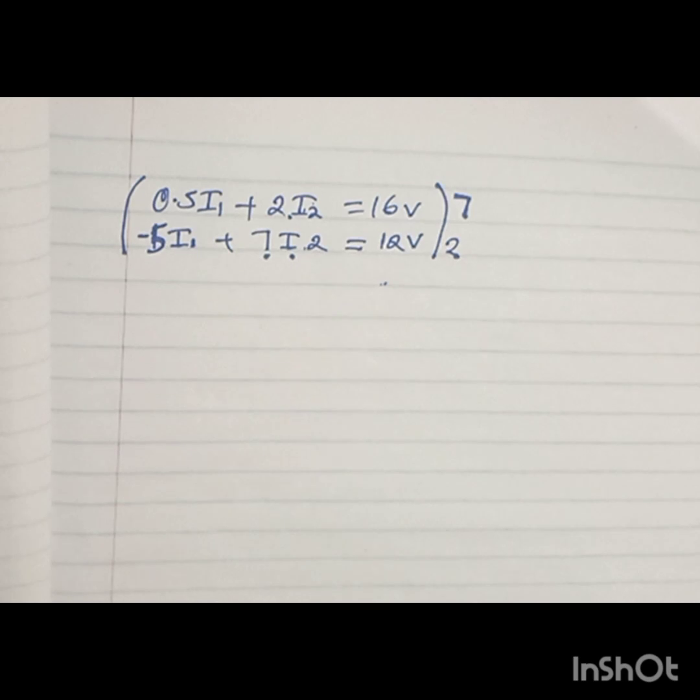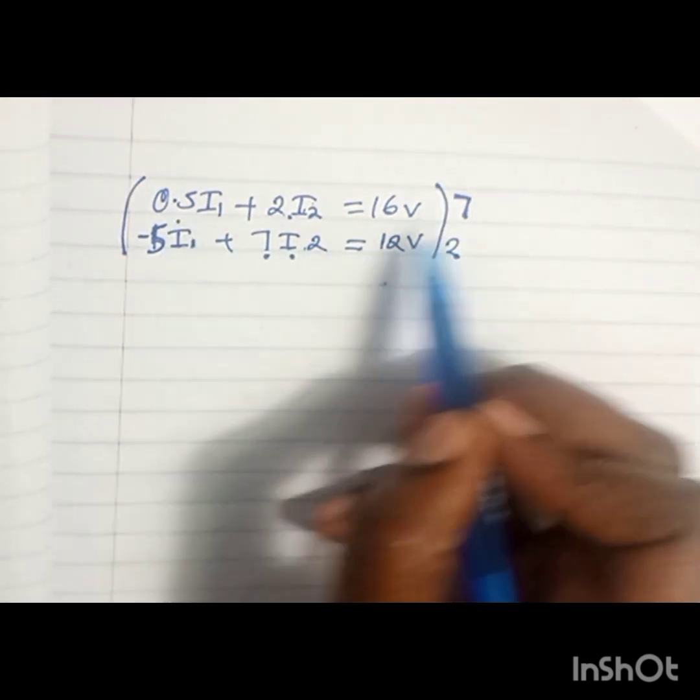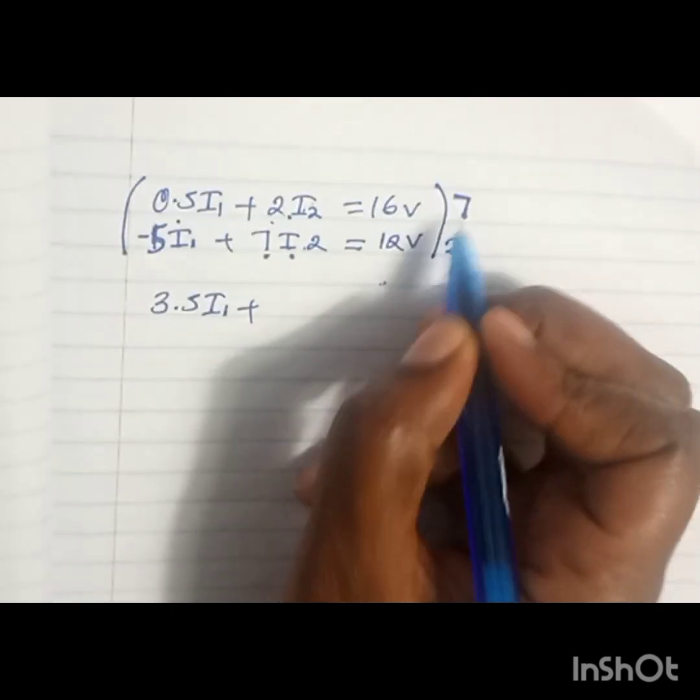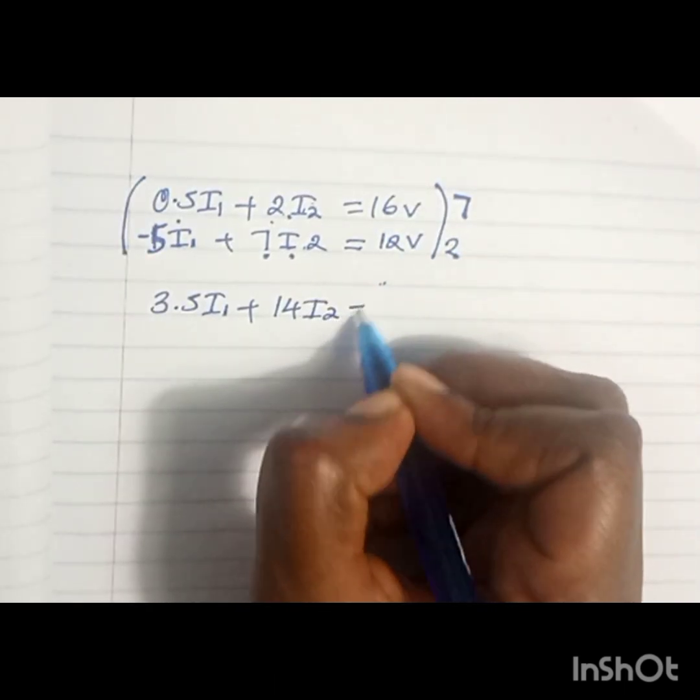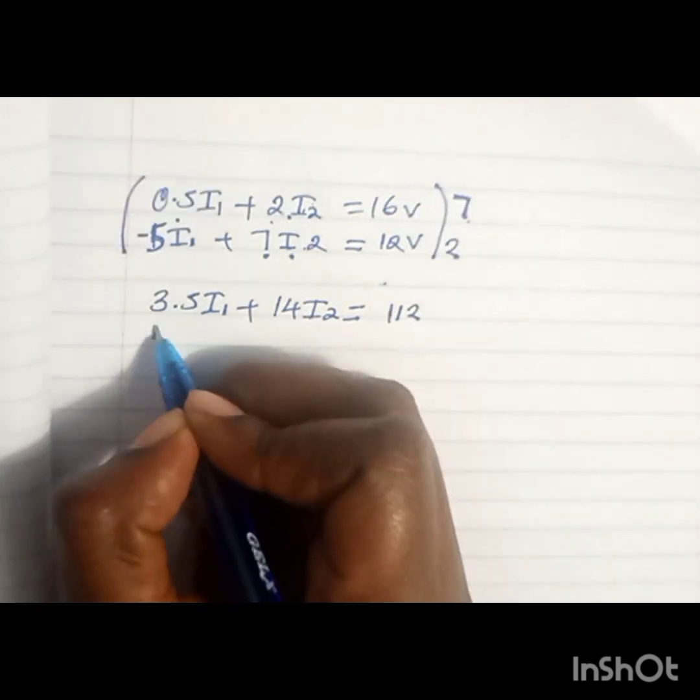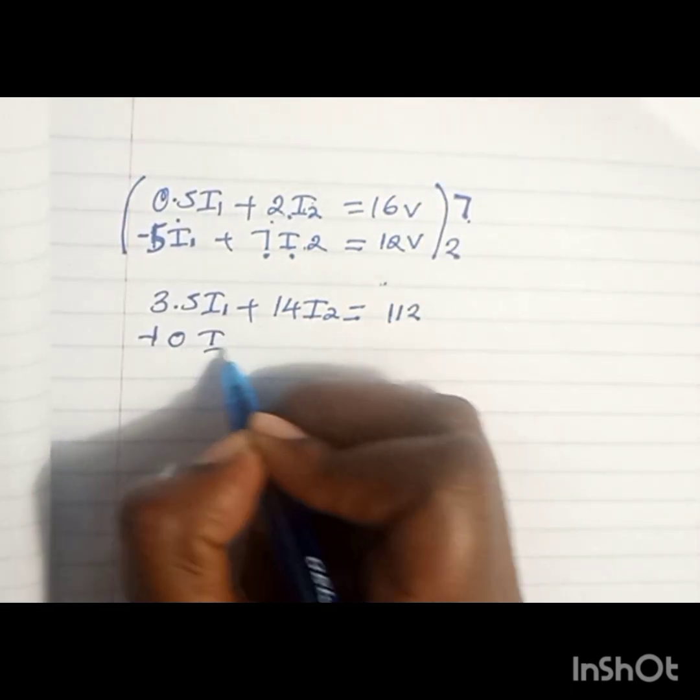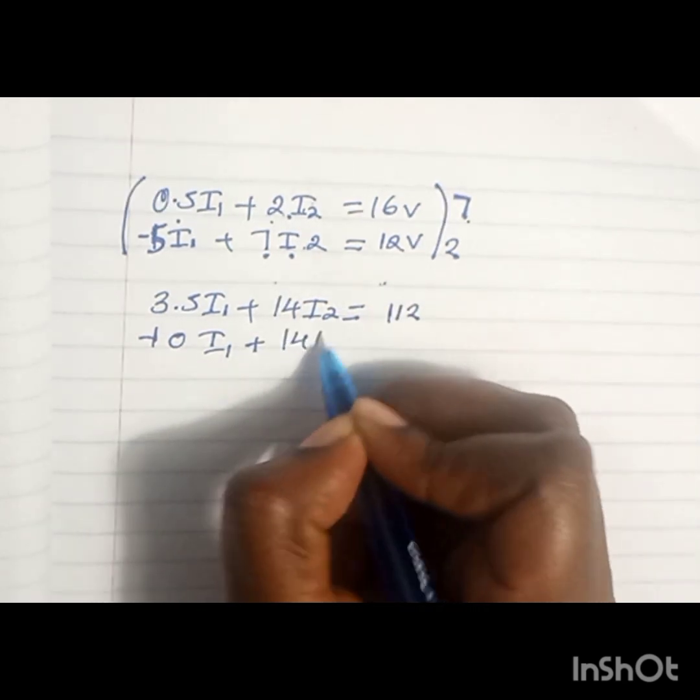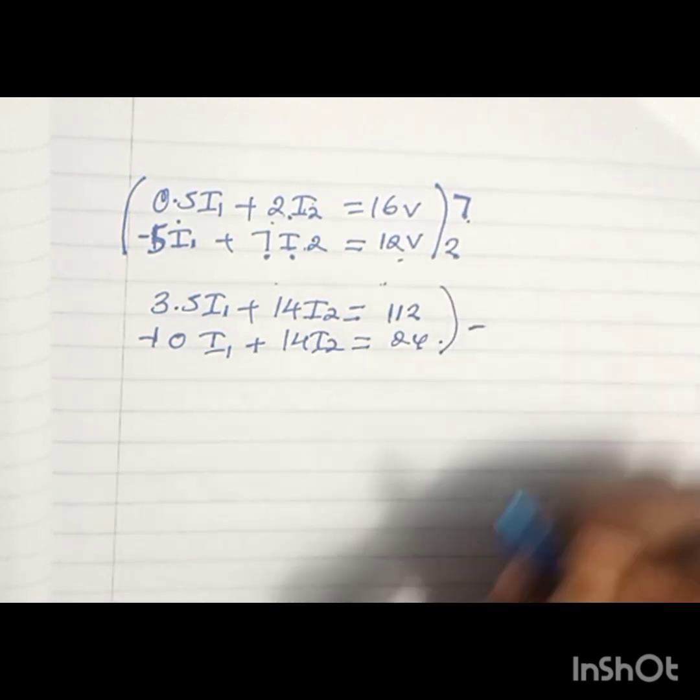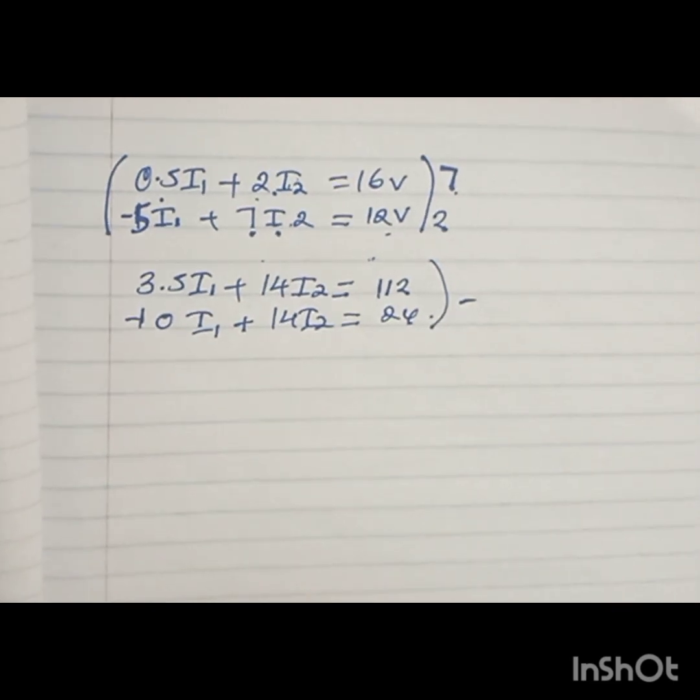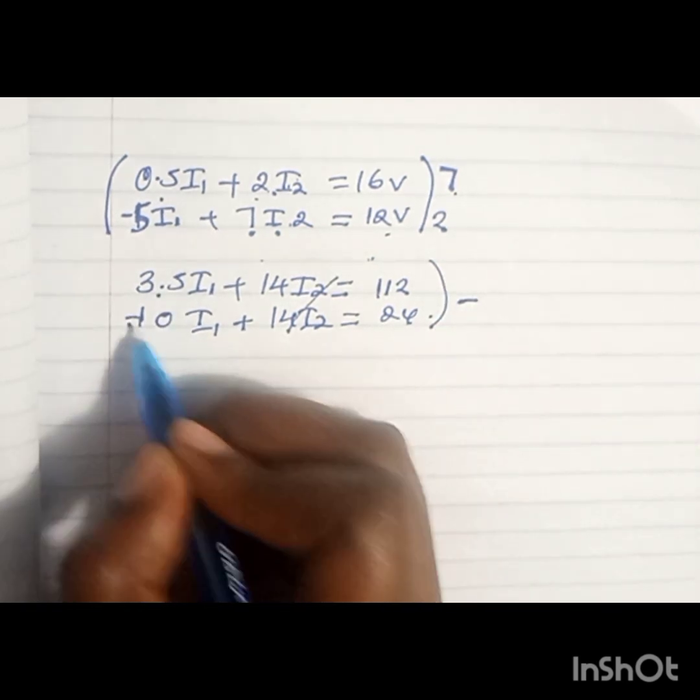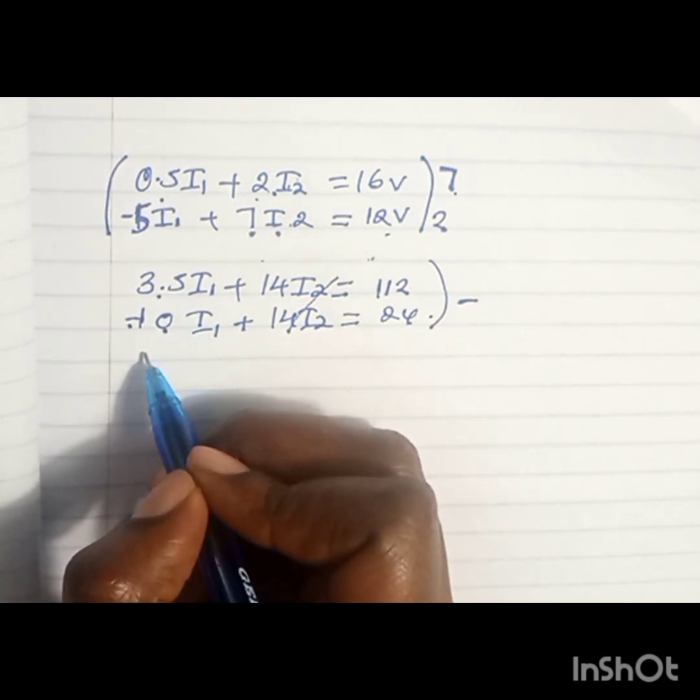0.5 times 7 is 3.5I1 plus 7 times 2 is 14I2 equals 16 times 7, which is 112. Then we have minus 5 times 2, which is minus 10I1, plus 7 times 2 is 14I2 equals 12 times 2, which is 24. For us to eliminate I2, we will subtract the two equations so that 14 minus 14 becomes 0. Then I have 3.5 minus minus 10, which is the same as 3.5 plus 10, so it becomes 13.5I1.